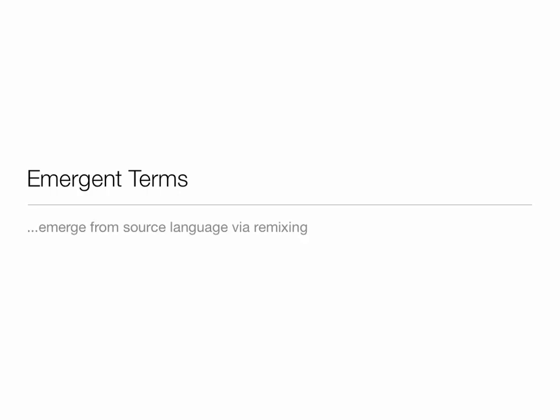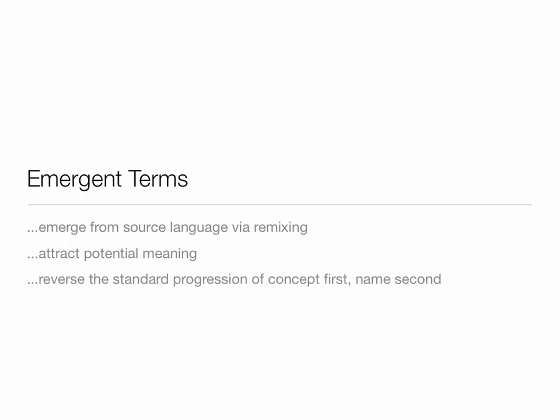Emergent terms emerge from source language via remixing, and they attract potential meaning by reversing the standard progression of concept first, name second. Typically when you're working on ideas, you'll start to have the idea and then create a name or term for it. With an emergent term, we reverse the process — we create a new term by remixing, and then meaning will follow; meaning will emerge to fulfill the term.